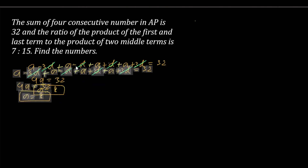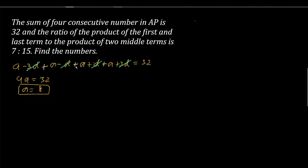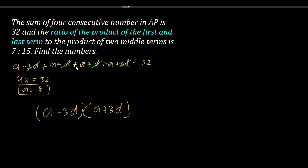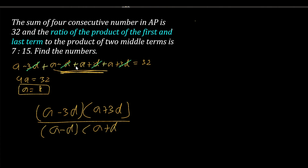Now we use the next condition: the ratio of the product of the first and last term to the product of the two middle terms is 7/15. The first term is a-3d, the last is a+3d, and the two middle terms are a-d and a+d. So: (a-3d)(a+3d) / [(a-d)(a+d)] = 7/15.